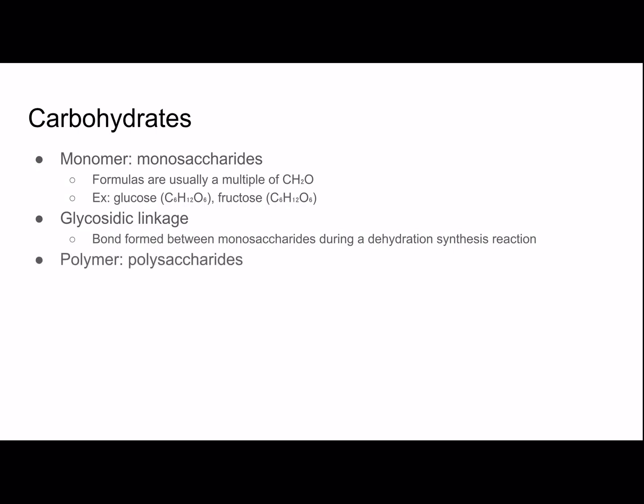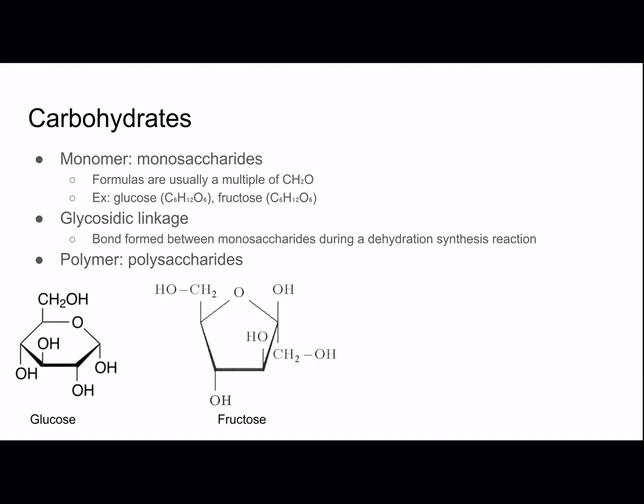The polymer is polysaccharides — several monosaccharides will make a polysaccharide. More specifically, if you have two monosaccharides joined together, you're going to make a disaccharide. Let's look at an example of a dehydration synthesis reaction with carbohydrates. We have glucose, which is a monosaccharide, and fructose, which is another monosaccharide. In both pictures, there are more hydrogen atoms and carbon atoms that are not being drawn, just to avoid clutter.